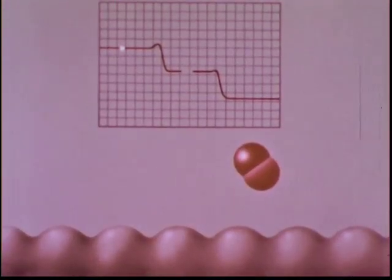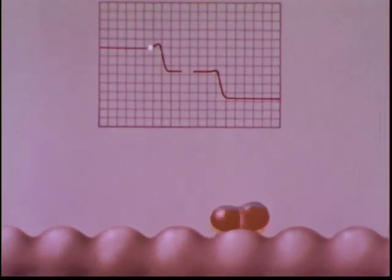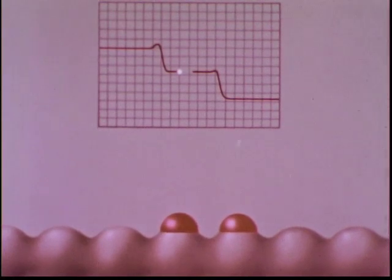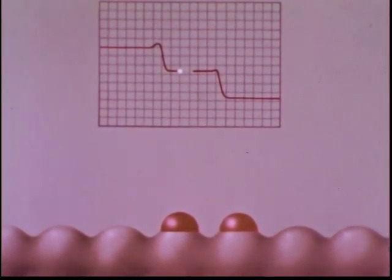This potential energy diagram shows the two steps in the catalytic reaction. The first barrier is passed as the oxygen bond breaks and the atoms are adsorbed. Only about one in a thousand collisions leads to adsorption. This is the slower step.